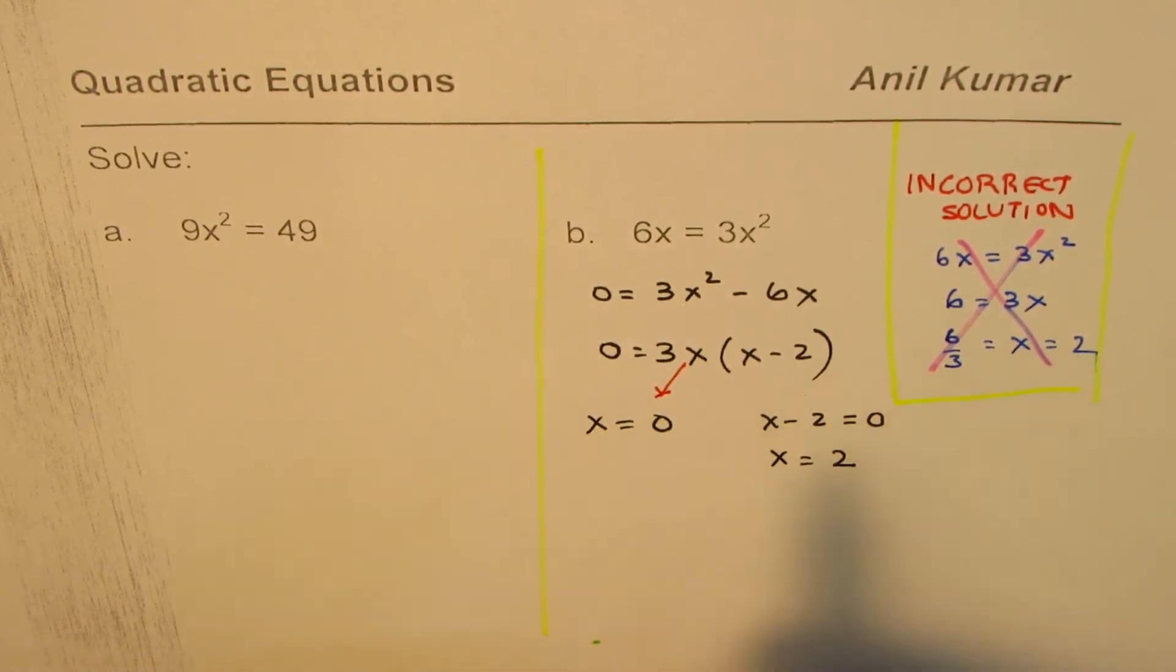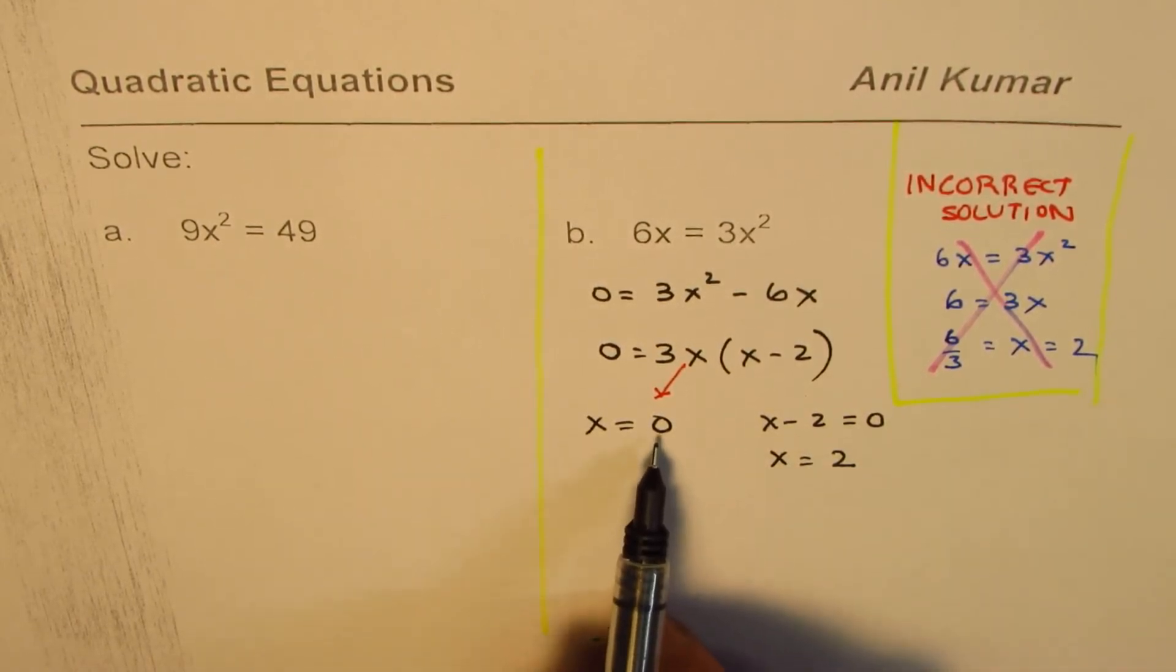So we do get one of the solutions which we got previously, but we missed one which is x equals to 0. That is important.